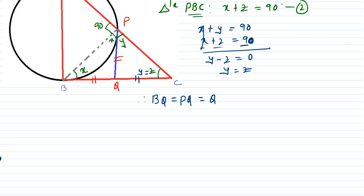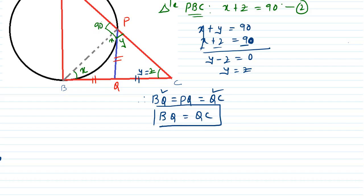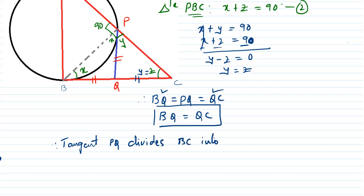Since BQ equals QC, the tangent PQ divides BC into two equal parts — that is, the tangent PQ bisects BC. Hence proved.